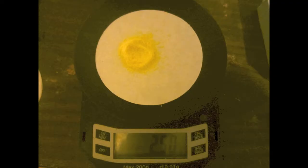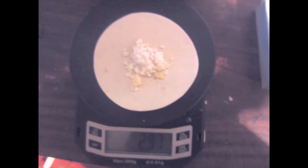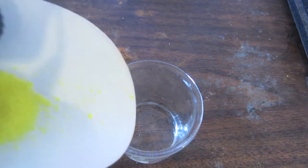To begin, take 2.5 grams of potassium chromate. You can also use potassium dichromate. Then get 3 grams of potassium hydroxide and dissolve both in 15 milliliters of water.